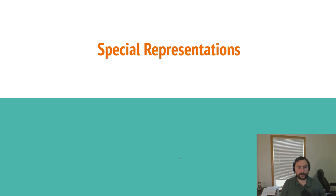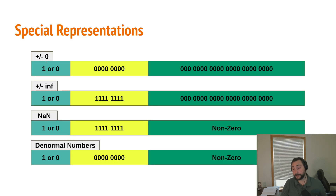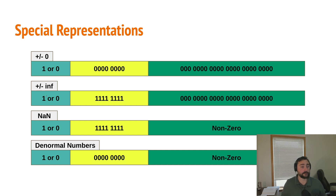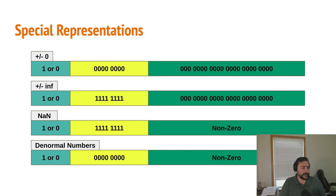There are some special representations. To represent 0 we actually have two representations: positive and negative 0, which is when we have all zeros for both mantissa and exponent, with either a 0 or 1 in the sign bit. We also have positive or negative infinity — for when a number is too large or too small — represented by either 0 or 1 in the sign bit, all 1s in the exponent, and all 0s in the mantissa. We also have the special case of Not a Number (NaN), for when an invalid representation occurs and something bad has happened. The sign bit can be 0 or 1, the exponent is all 1s — similar to infinity — but unlike infinity, the mantissa is a non-zero value.